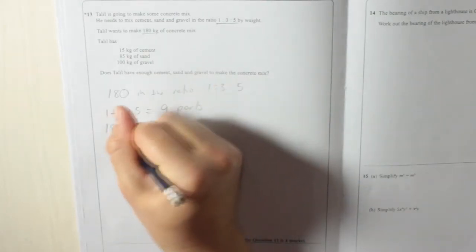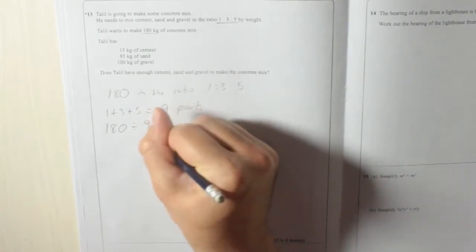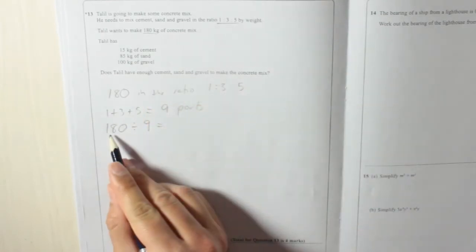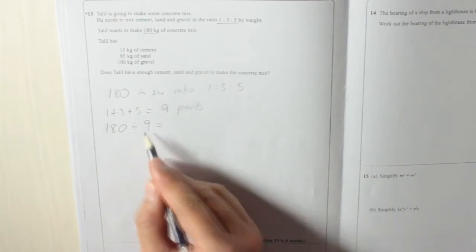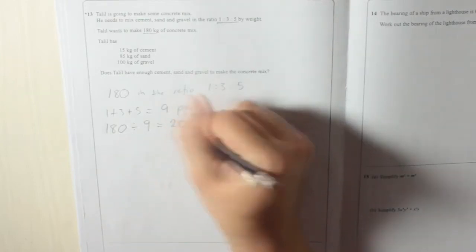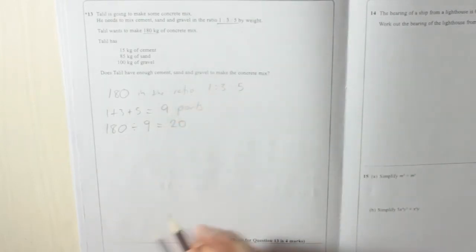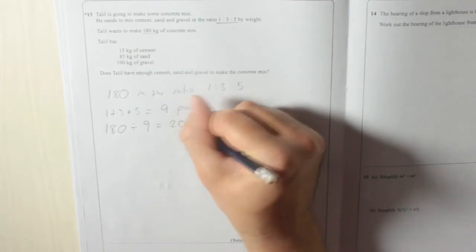So what we need to do is divide up 180 by the 9 parts. Now, 18 divided by 9 is 2, so 180 divided by 9 is 20. So that means each part is 20 kilograms.